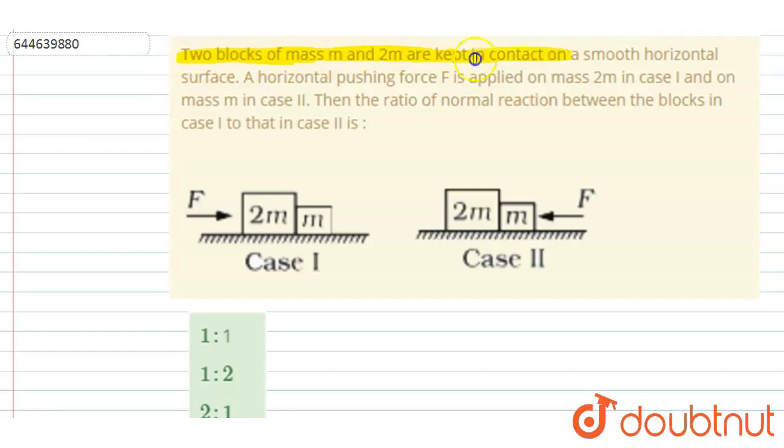m and 2m are kept in contact on a smooth horizontal surface. A horizontal pushing force F is applied on 2m in case 1 and on small m in case 2. Then the ratio of normal reaction between the blocks in case 1 to